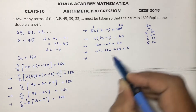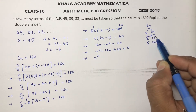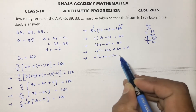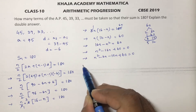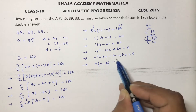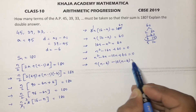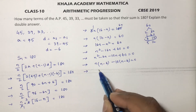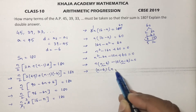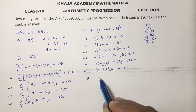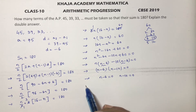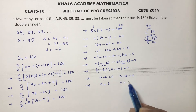Using the pair 6 and 10: n squared minus 6n minus 10n plus 60 equals 0. Taking n common from the first two terms gives n(n minus 6), and taking minus 10 common from the next two gives minus 10(n minus 6). So (n minus 6)(n minus 10) equals 0, giving n equals 6 or n equals 10.